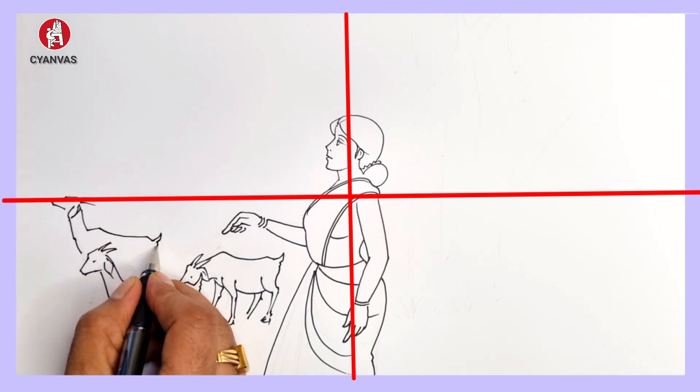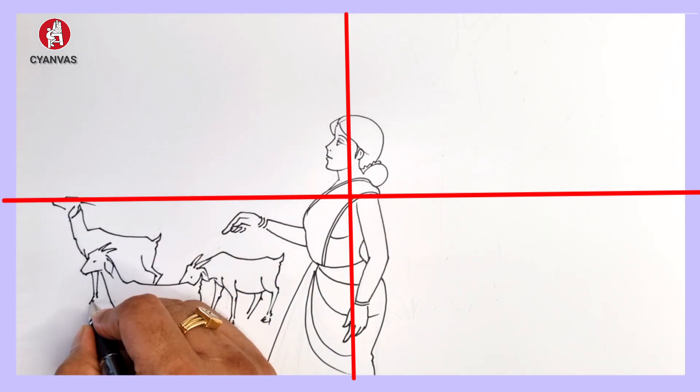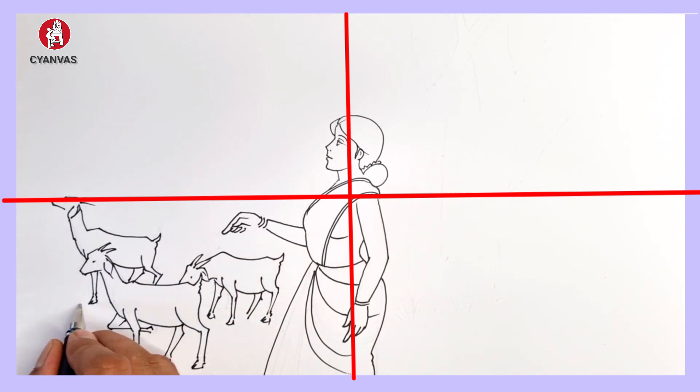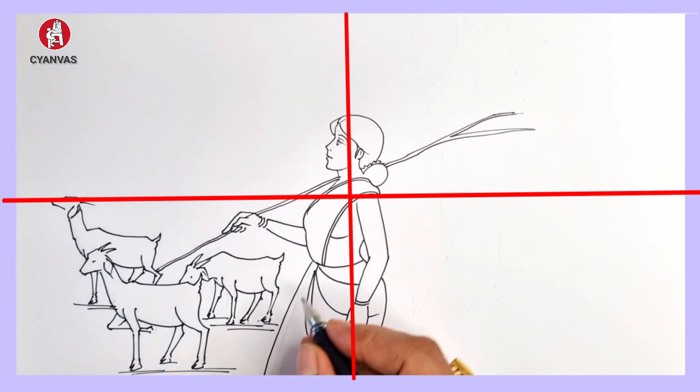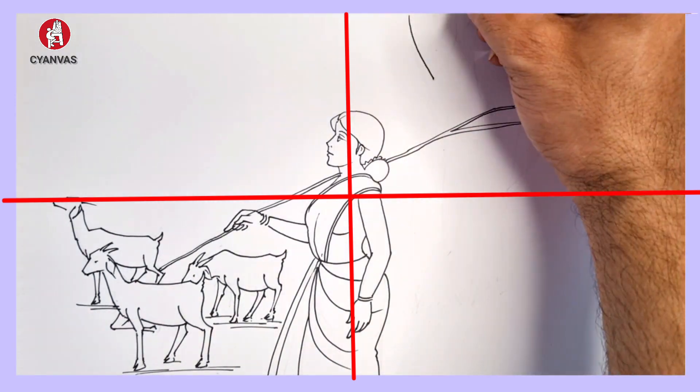We'll draw more than two or three goats. All have the same structure. When you draw a single goat, you can draw other goats very easily.